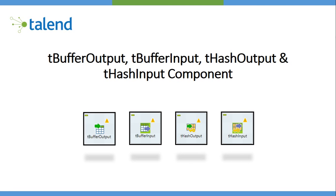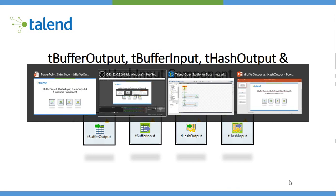In this video I'll talk about data storage in memory while working on different integration jobs in Talend. We have two different types of components we could use to store data in memory: one is the buffer components and second is the hash components. We have a buffer output and a buffer input — buffer output is used to write data to a buffer memory and buffer input reads. Same goes for hash output and hash input.